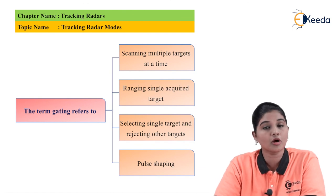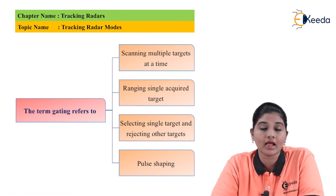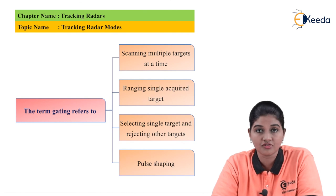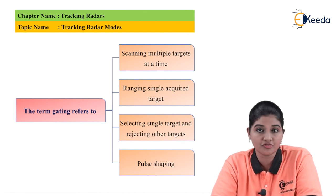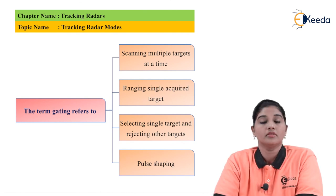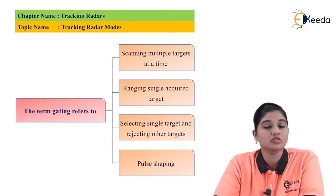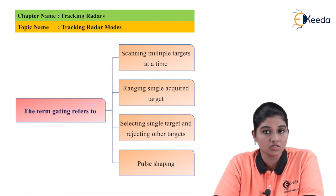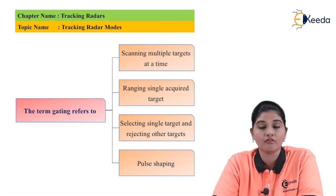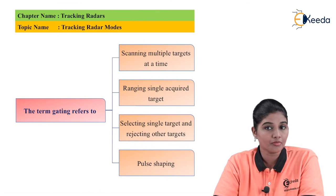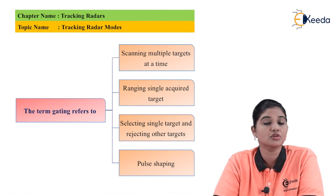That covers the topic of different tracking modes used by the tracking radar, which includes single tracking, multiple tracking methods, continuous beam scanning, and multiple target tracking. These are the various methods included in tracking radar for tracking objects that are moving or stationary. I hope you understood this topic. Thank you very much for watching this video.